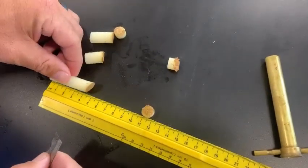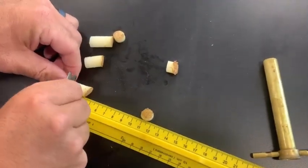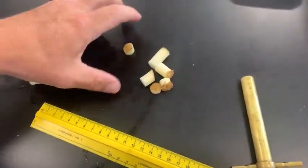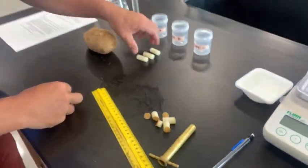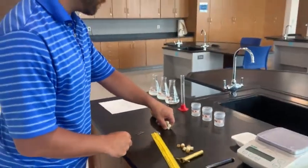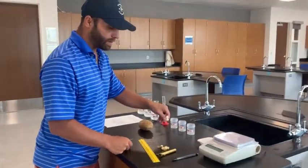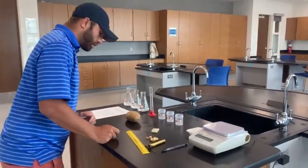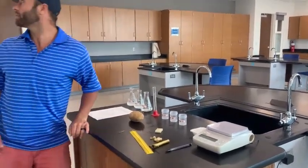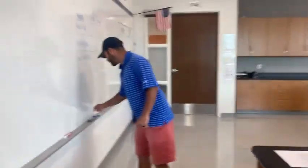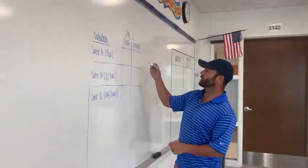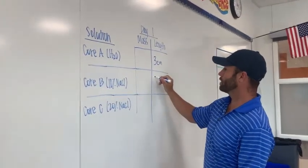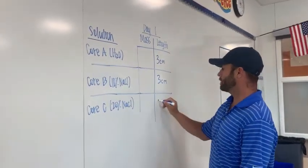Do the same thing again — one, two, three. Now, if we were in class, this is what would be going on in lab groups. So I have my three potato cores. They are all measured and exactly three centimeters. Recording on my data table: length core A — three centimeters, core B — three centimeters, core C — three centimeters. Great.